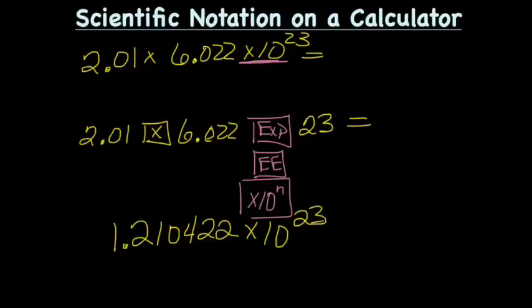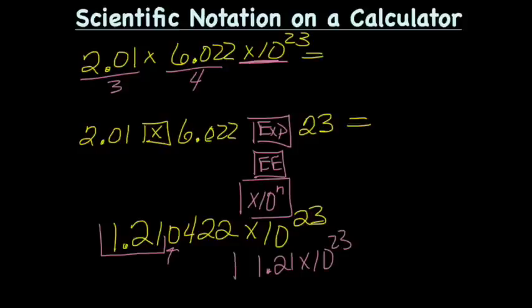I got on my calculator 1.210422 times 10 to the 23rd. Now to finish this up, we should look at sig figs. This guy has 3 sig figs. This guy has 4 sig figs, so our answer needs to have 3 sig figs, which are those 3. And the number we're going to drop is less than 5, so we just drop. And the final answer would be 1.21 times 10 to the 23rd. Now, if you were able to get that answer in your calculator, go ahead and move on with the lecture. If you weren't, go back, look over the calculators again, see if you can figure out this answer.